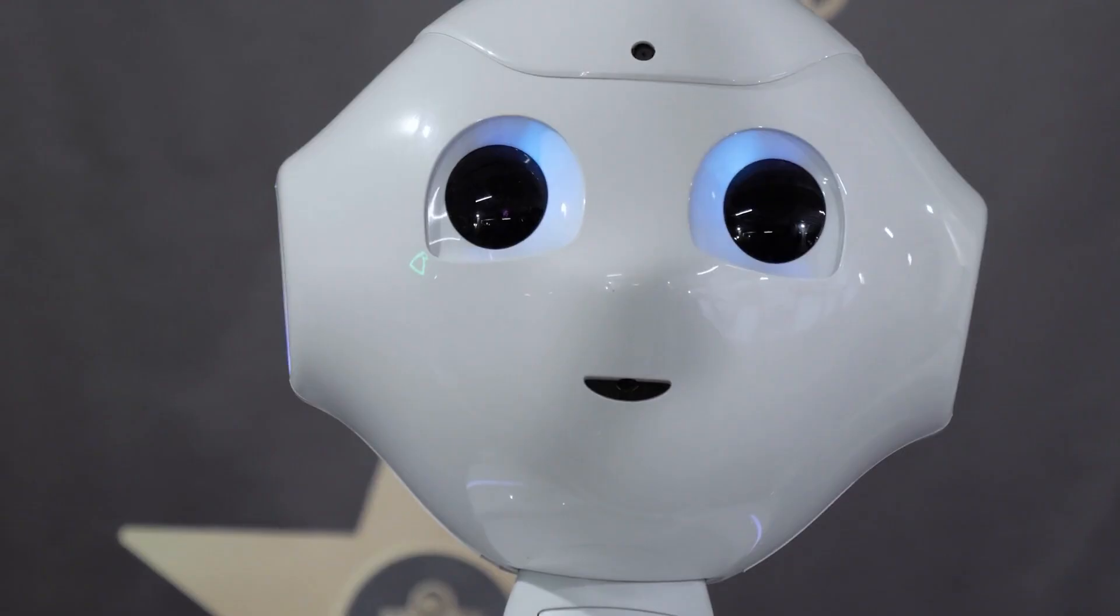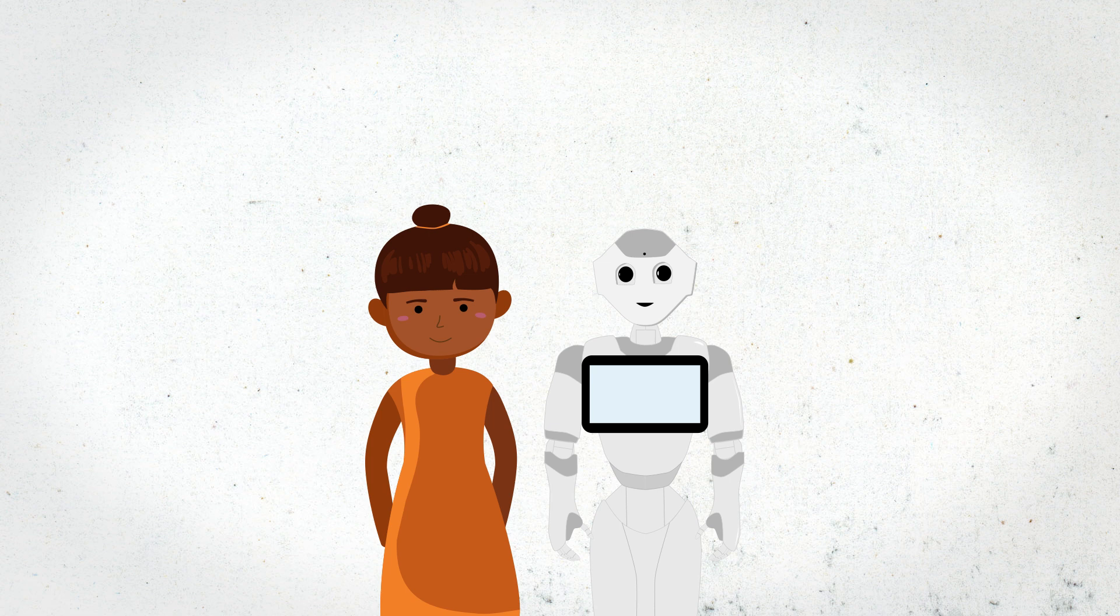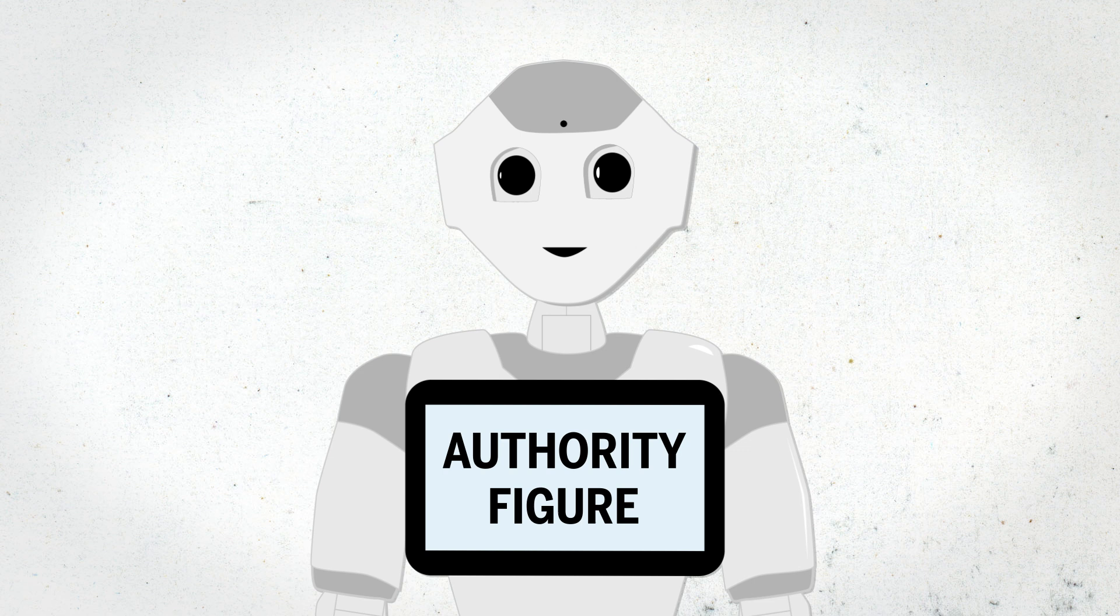To test this human-robot interaction, researchers used Pepper, a roughly one-meter-tall robot with a human-like face. They created two different study groups: those who were Pepper's peers and those who were under Pepper's direction.